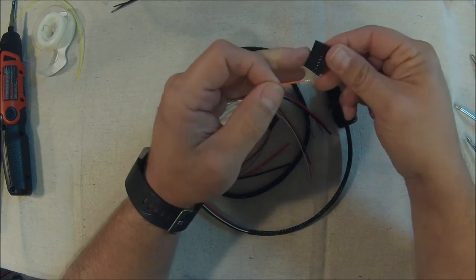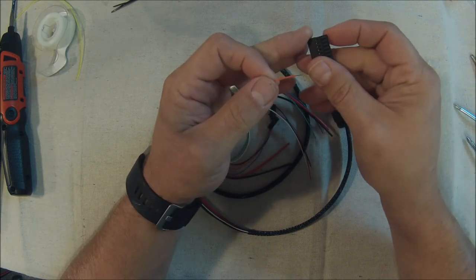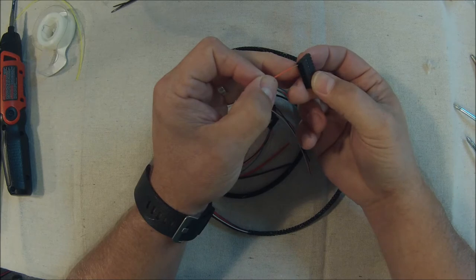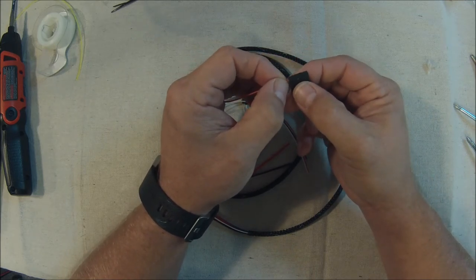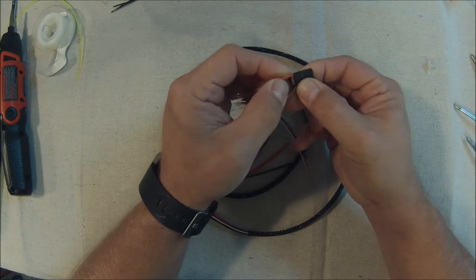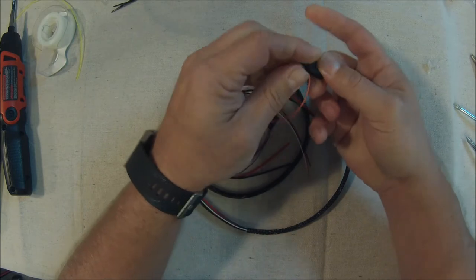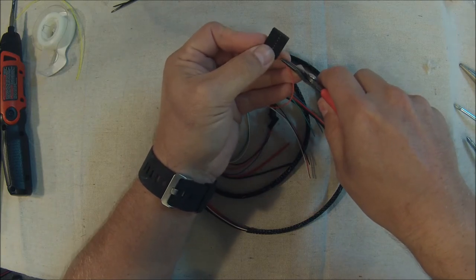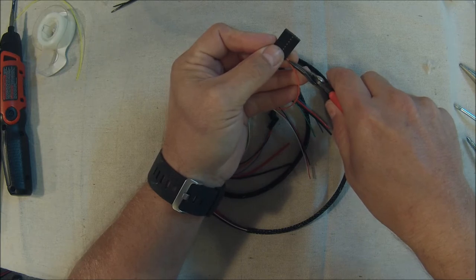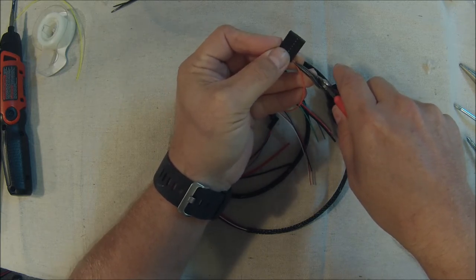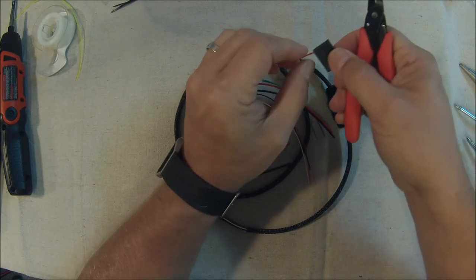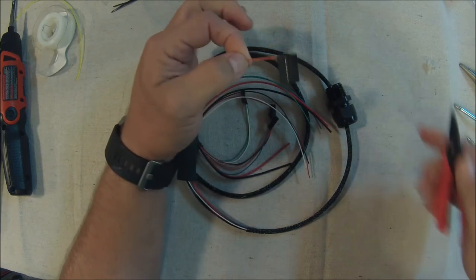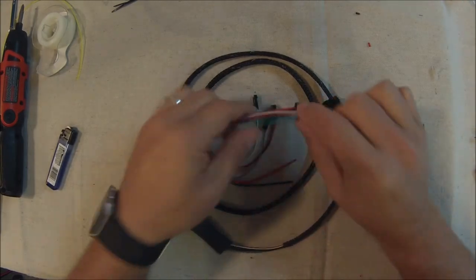Each wire is pre-stripped, so all you have to do is pull the insulation off of it and insert the wire into this position here. Slide that in there all the way. You might want to grab those pliers and keep pushing a little bit at a time until it's completely seated. Try not to damage the wire with your pliers, and then finish the rest of them off.